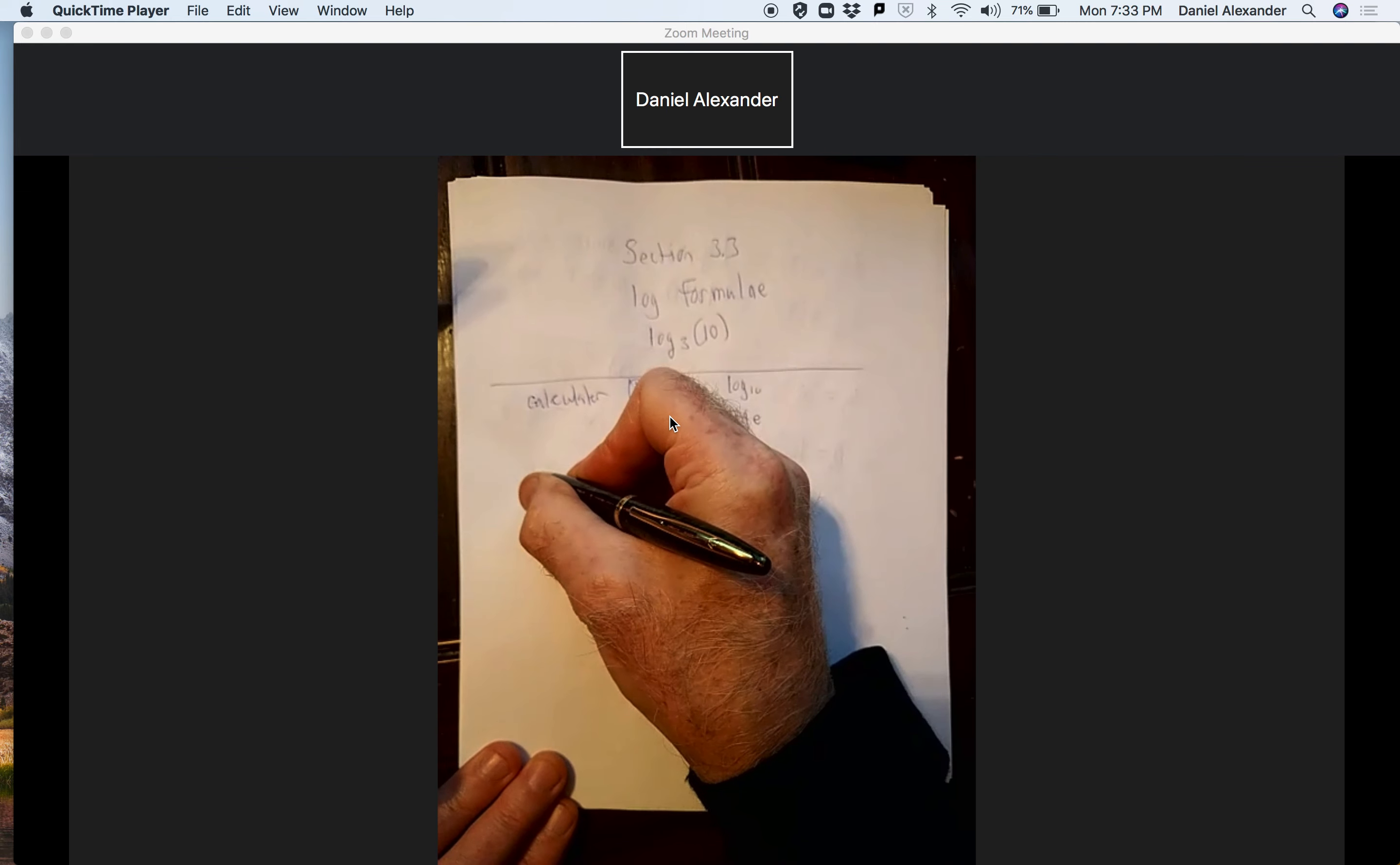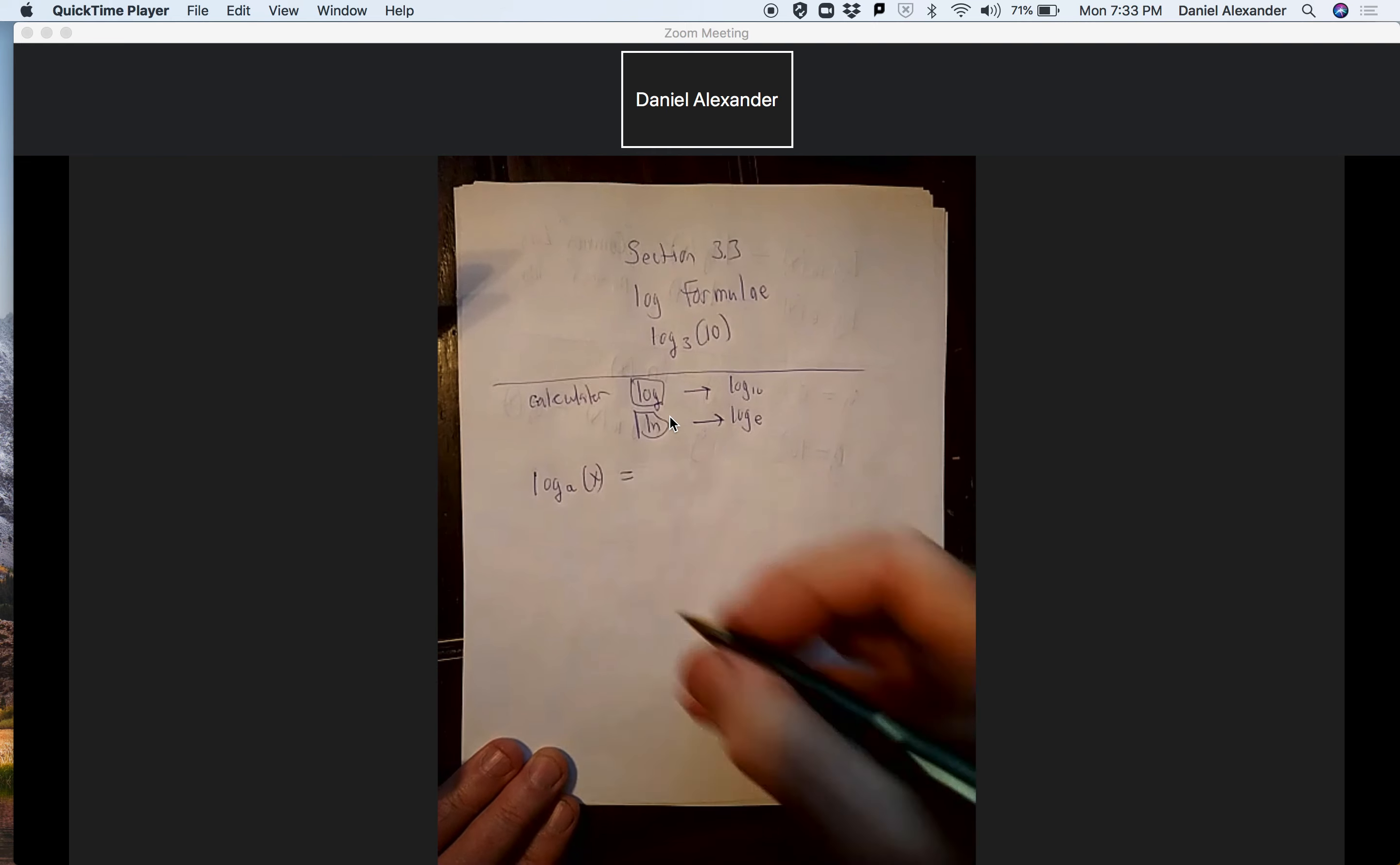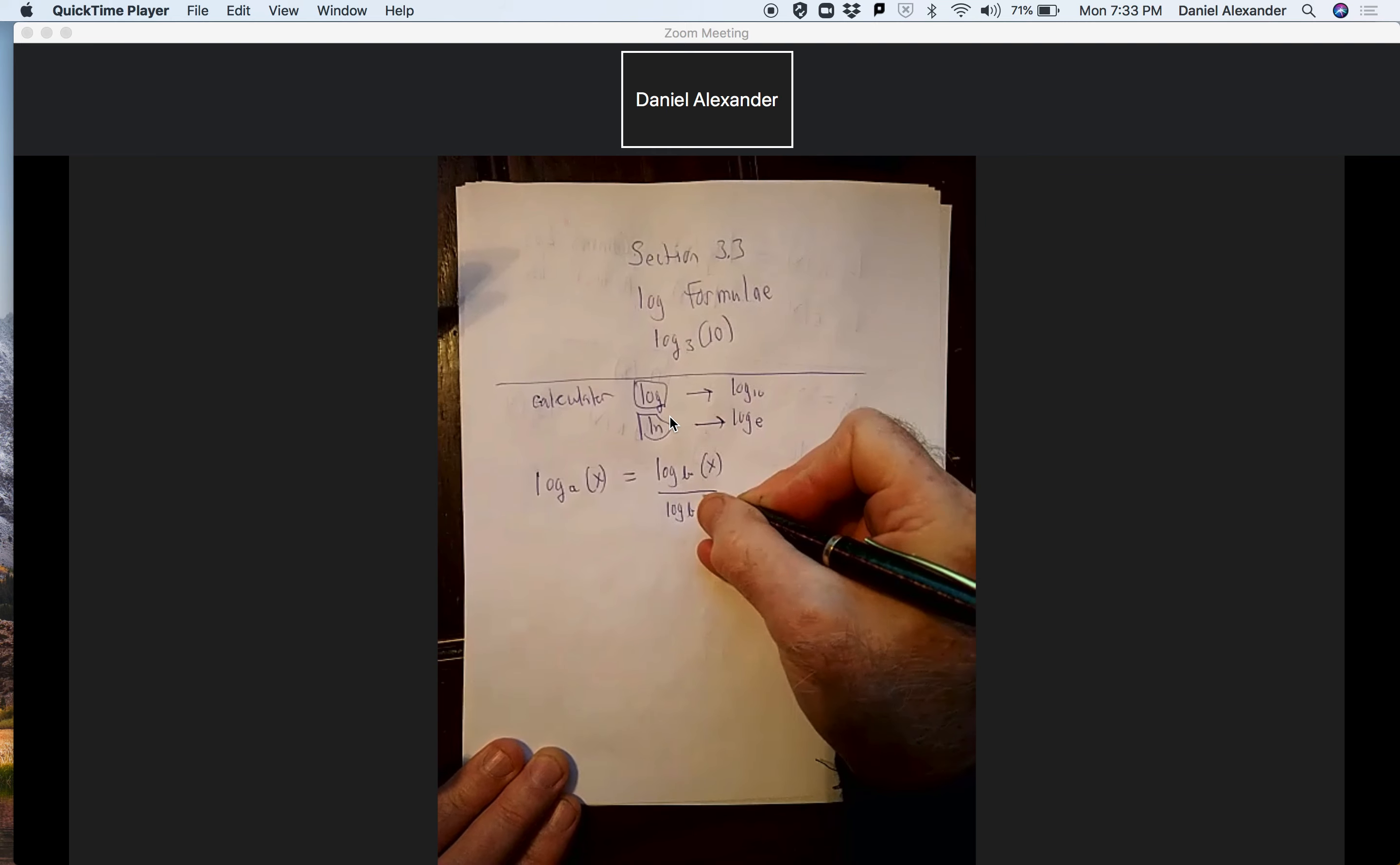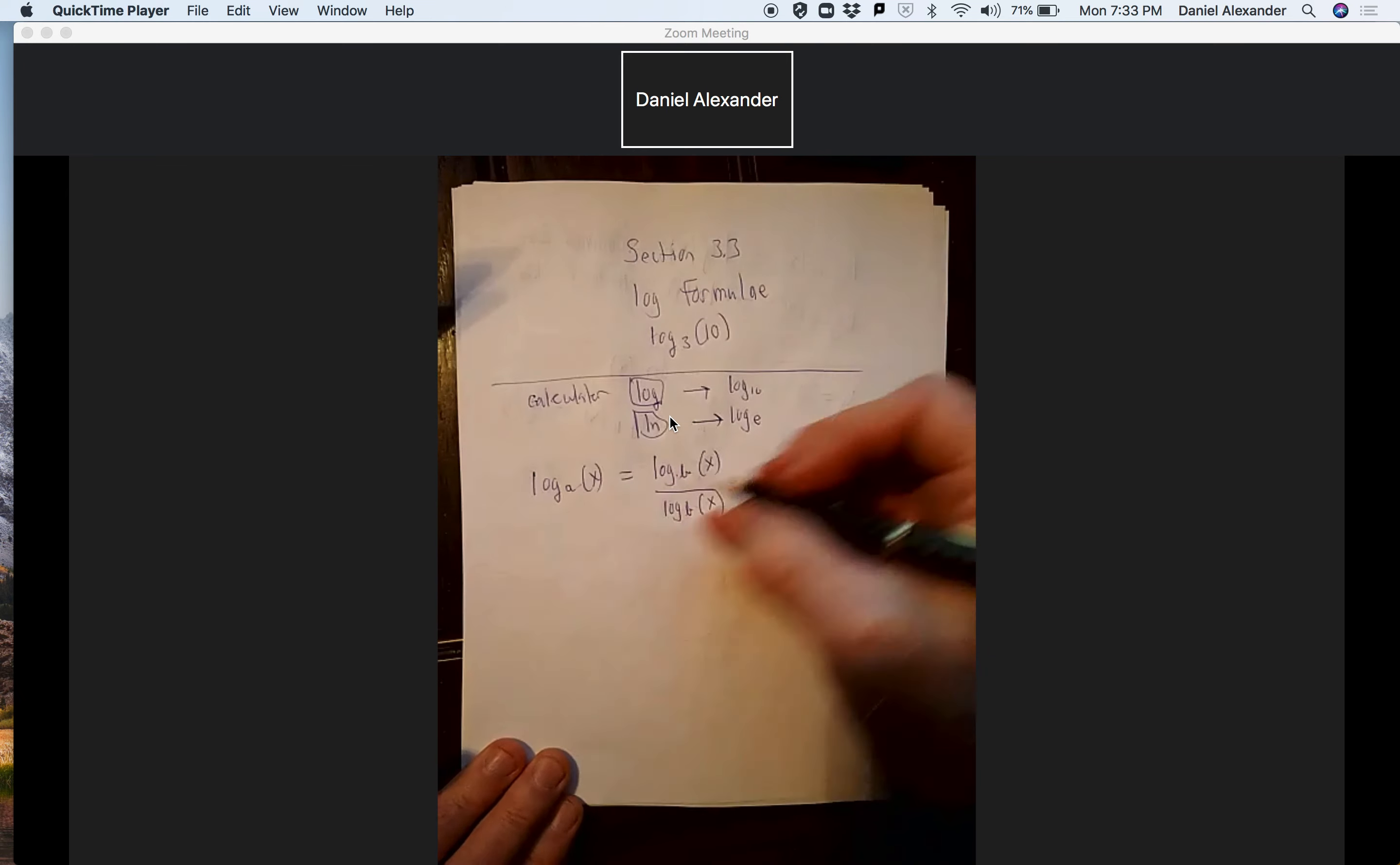So our log formula says this: that the log a to the x, we can convert that to any base any way we want. So it says I'm going to pick a number b for a base and I plug the x in here, and then I also put that same log base b on the bottom and put the a in here. So that tells us we can go to any base we want, and this is going to work one of two ways.